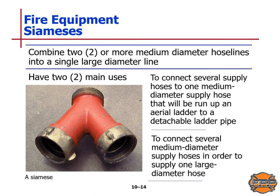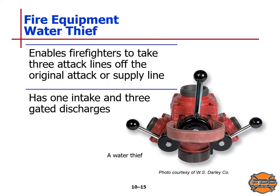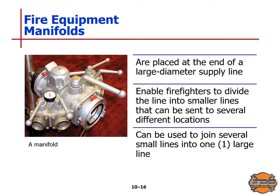A Siamese connection combines two or more medium diameter hose lines into a single large diameter line. It has two main uses: to connect several supply hoses to one medium diameter supply hose run up an aerial ladder to a detachable ladder pipe, and to connect several medium diameter supply hoses to supply one large diameter hose. A water thief enables firefighters to take three attack lines off the original attack or supply line — it has one intake and three gated discharges. A fire equipment manifold is placed at the end of a large diameter supply line, enabling firefighters to divide it into smaller lines sent to several locations, or to join several small lines into one large line.